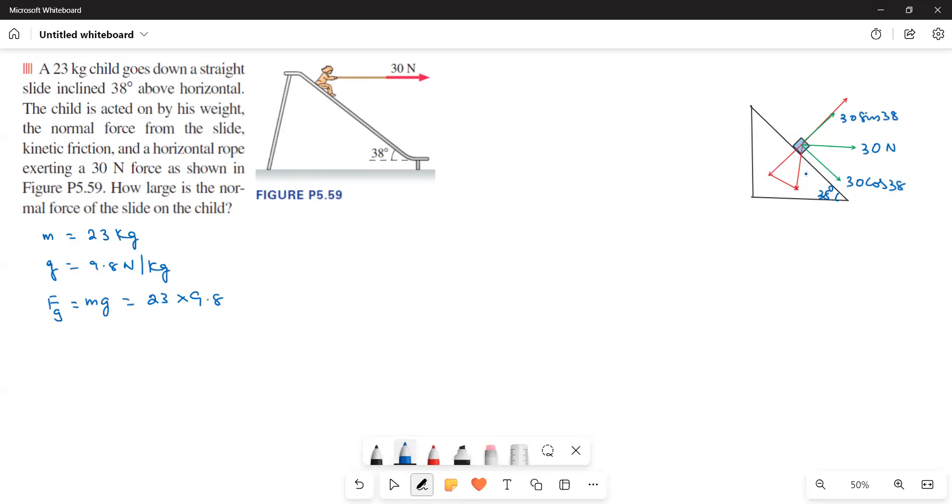And then we have this is FG and then this is FG parallel and then this is FG perpendicular and then this is FN. Now green lines represent the force exerted by the rope and then red lines represent the other forces.